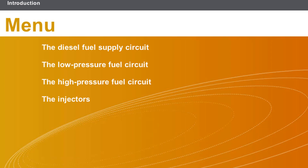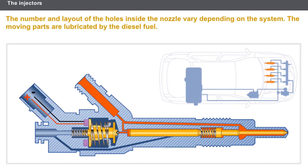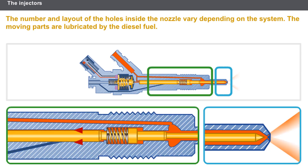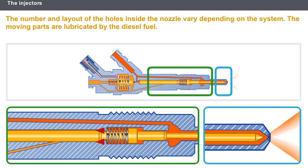This lesson will cover the injectors. The injectors are supplied with fuel via the high-pressure pipes coming from the injection rail. At the point of injection, the injector needle lifts to allow the fuel to flow towards the nozzle. The number and layout of the holes inside the nozzle vary depending on the system. The moving parts are lubricated by a very small amount of diesel fuel flowing towards the fuel return circuit. Caution: it is prohibited to dismantle an injector.